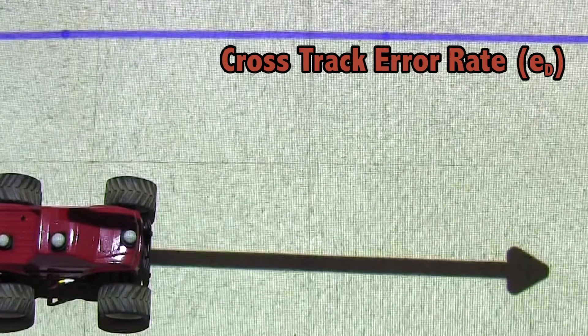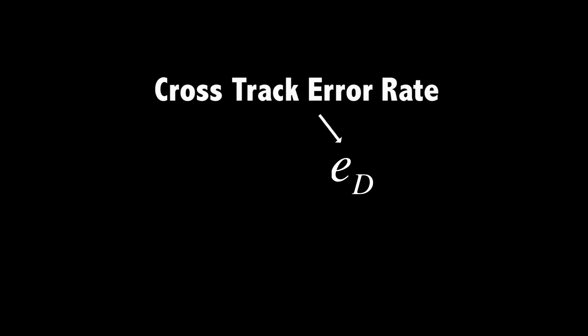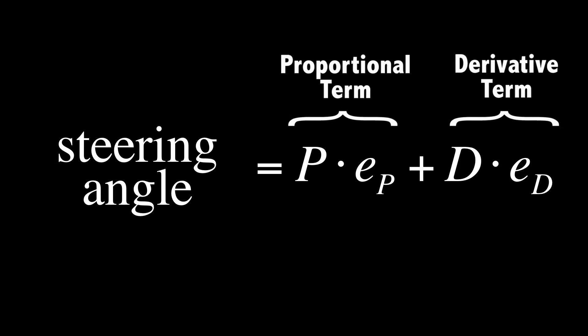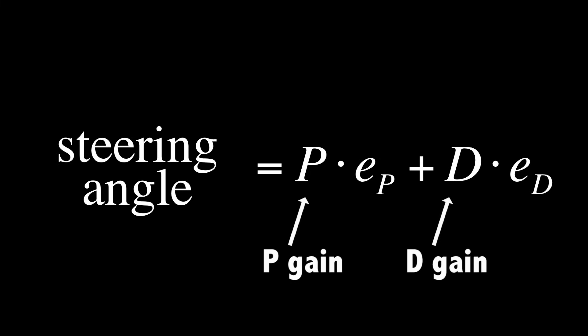In control theory, this is what is called a derivative term. This rate term can then be multiplied by its own gain and added to the proportional term to construct an updated controller. Now that we have two terms, we have two gains that must be tuned simultaneously.